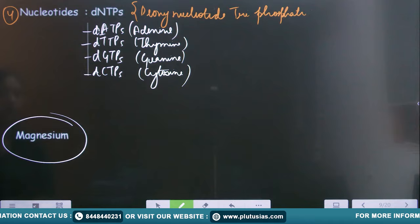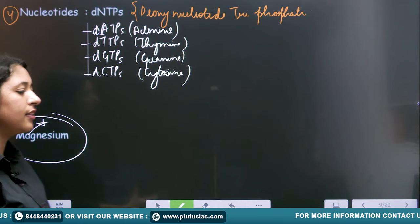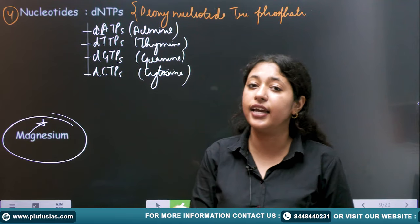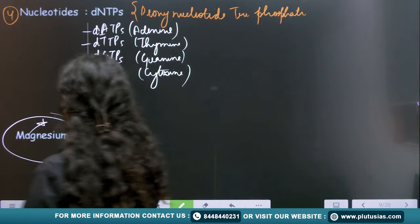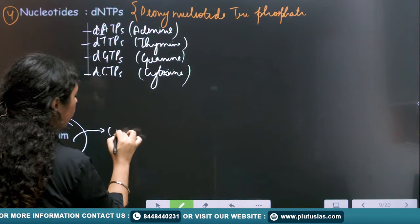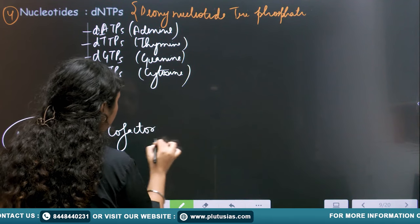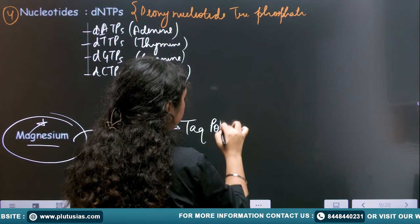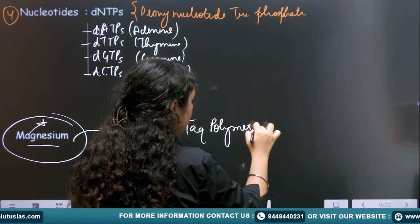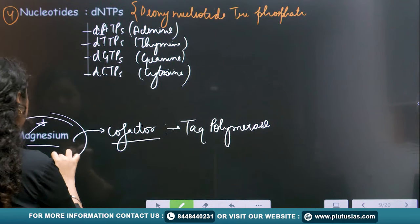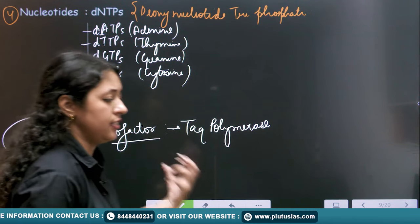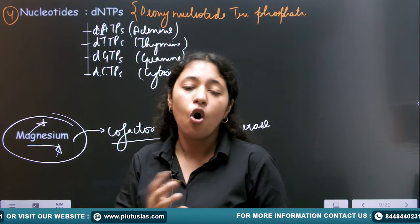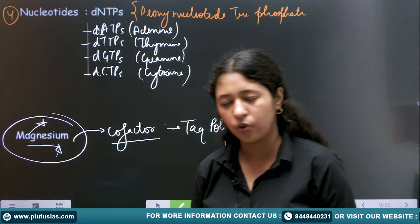Magnesium is not itself a component but has a major role — without it we will not see DNA bands. Magnesium is a cofactor of Taq polymerase. For the activity of Taq polymerase, magnesium is very necessary. We can add magnesium separately or within the buffer.